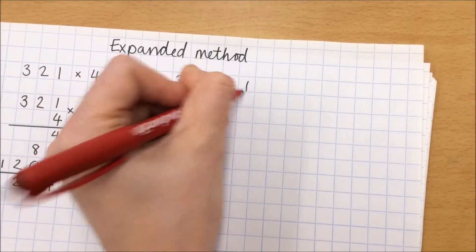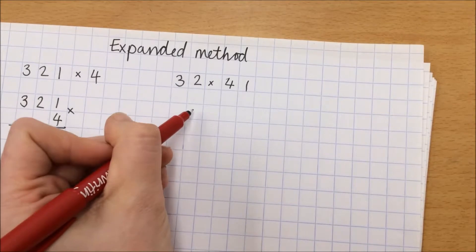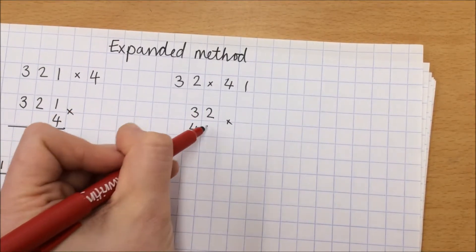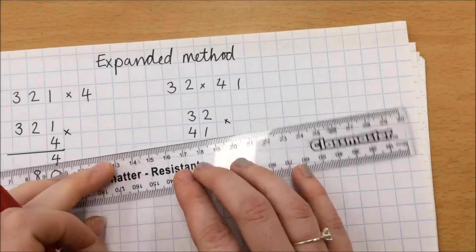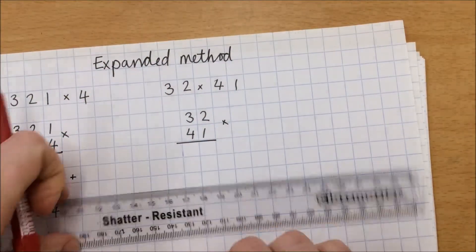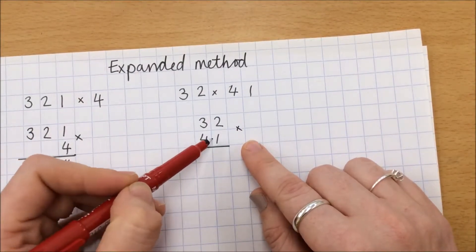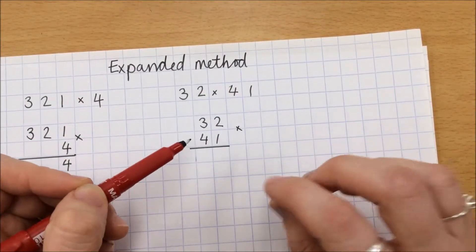So 32 multiplied by 41. I could set that up in exactly the same way. 32 multiplied by 41 underneath itself. Except now we've got two digits, so we need to deal with that very slightly differently.